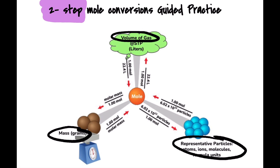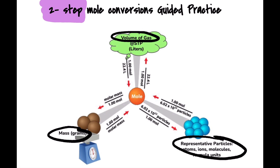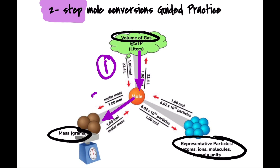For example, in a two-step mole conversion problem you could start with grams of a substance and be asked to determine the number of molecules — step one: convert to moles, step two: convert to molecules. Or you could be given the volume of a substance and be asked to determine its mass in grams — step one: convert from volume or liters to moles, step two: convert moles to mass in grams. Converting to moles will always be the middle step in a two-step mole conversion.